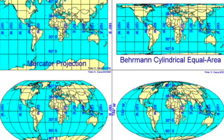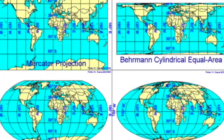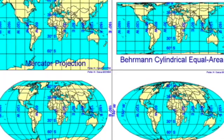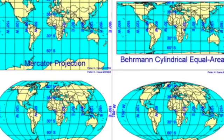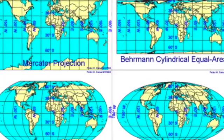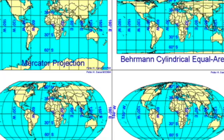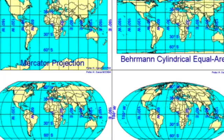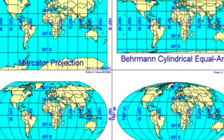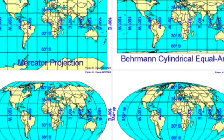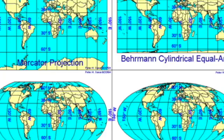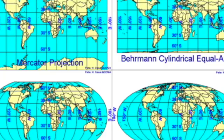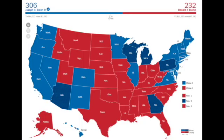Maps have four key advantages: first, maps don't have to show the whole planet. Second, they can provide more details than a globe. Third, they can be stored and carried easily. Fourth, they can focus on just one small area. In addition, maps tend to show more kinds of information than globes.